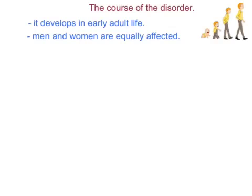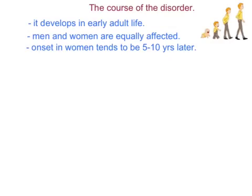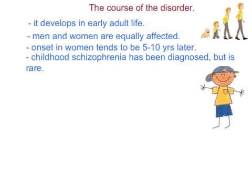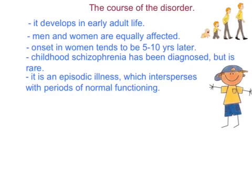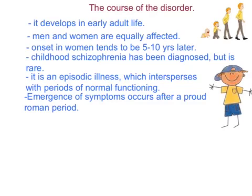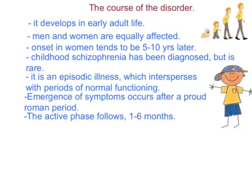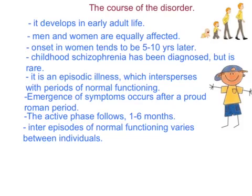The course of the disorder tends to develop in early adult life. Men and women are equally affected; however, the peak onset age in women tends to be 5–10 years later than in men, which is unexplained. Childhood schizophrenia has been diagnosed but is very rare. It is an episodic illness which intersperses with periods of normal functioning. The emergence of symptoms usually occurs after a prodromal period of a few weeks or months, in which changes in mood and behaviour are evident to people close to the sufferer, but specific symptoms have not yet appeared. The active phase then follows, lasting 1–6 months but can extend to a year. Inter-episodic functioning varies between individuals, and better inter-episodic functioning is associated with a better prognosis.